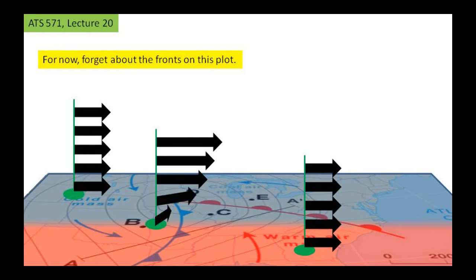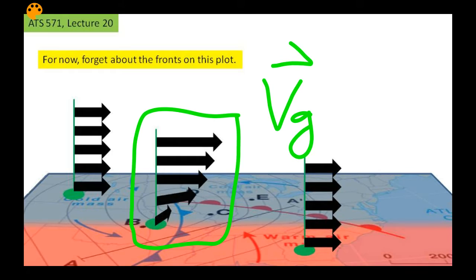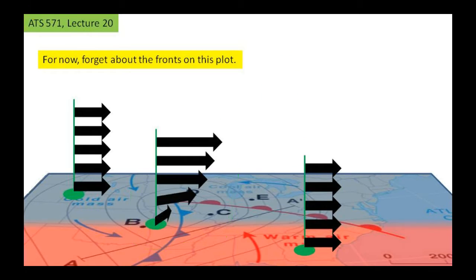That isn't the only way the geostrophic wind could be changing with respect to height. In the previous slide, all that was happening was that the winds were becoming faster with height. But a perfectly valid solution is where the winds are changing direction with respect to height. Strictly speaking, this is the geostrophic wind, not necessarily the real wind. But once you get away from the boundary layer, the geostrophic wind becomes a very good approximation to what the wind is doing.